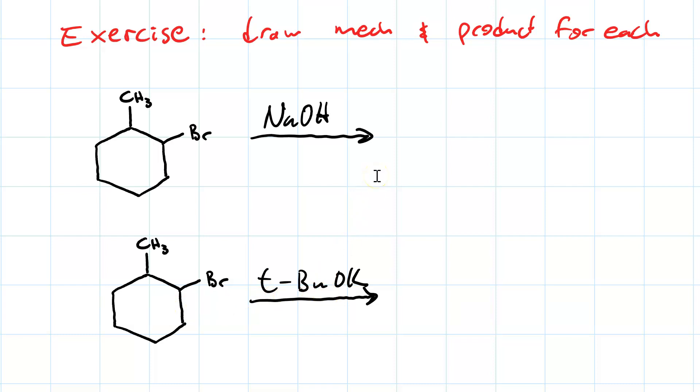Draw the mechanism, including proton transfer and loss of a leaving group, for the substrate with each base and draw the formula or the chemical structure of the product in each case. As usual, pause the video, do the work, and resume to see the answers.